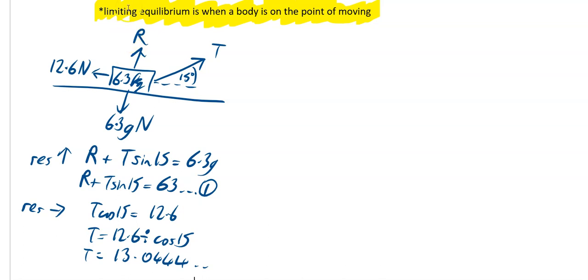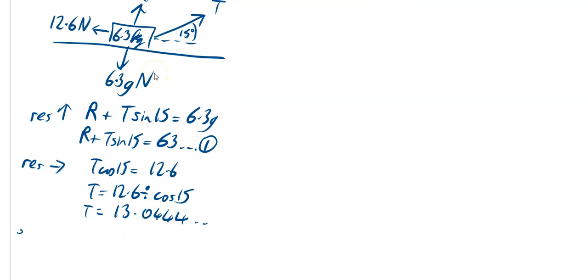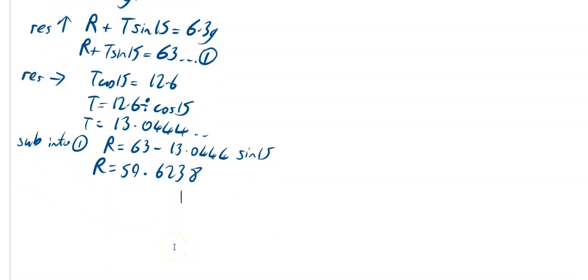So what we can do with that is sub it back into your first equation. So sub it back into equation 1 and then you have got R is equal to 63 minus, so I brought the T across and the T was 13.0444 and then times your sine of 15 and press equals and see what you get for your R. And what I got for my R was 59.6238.